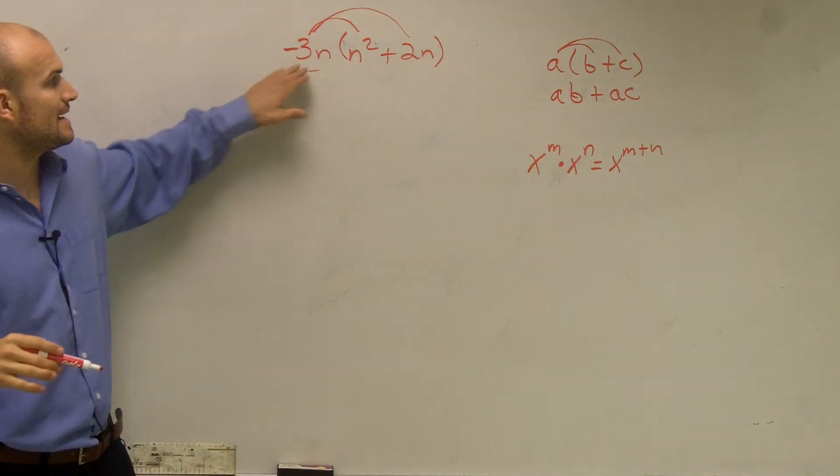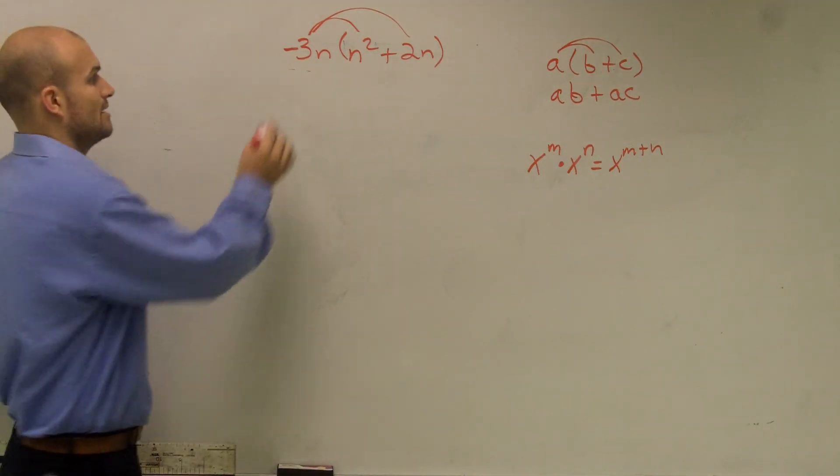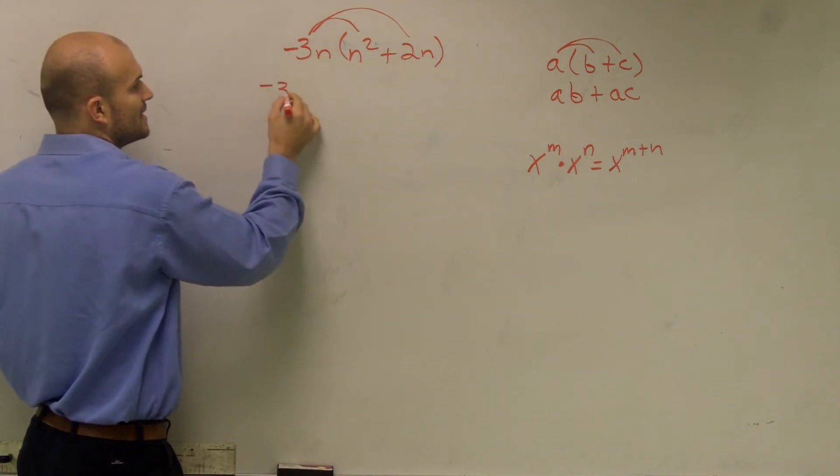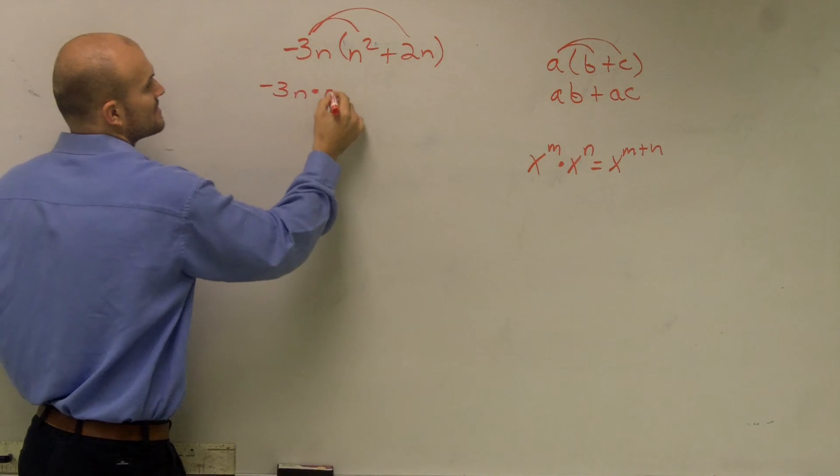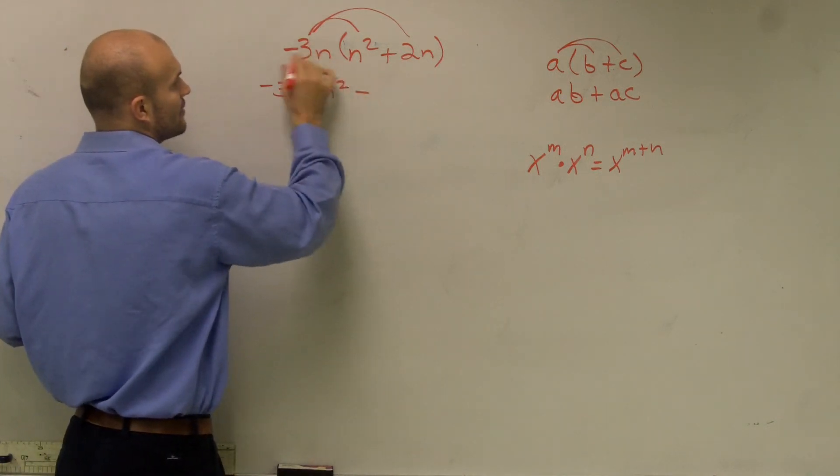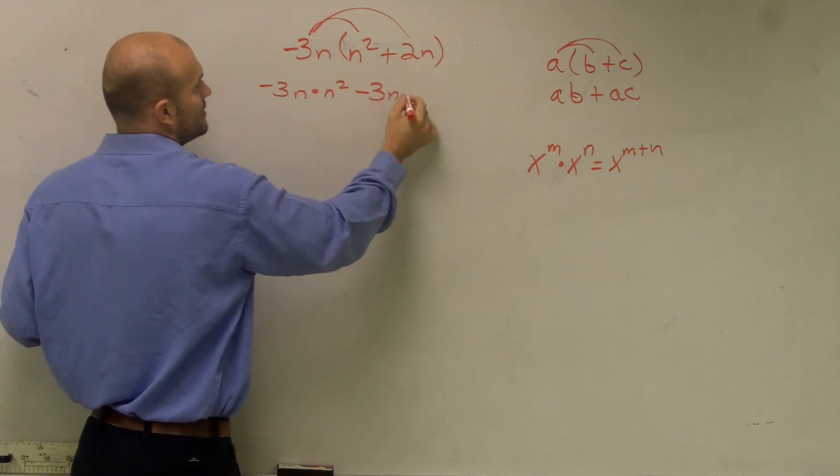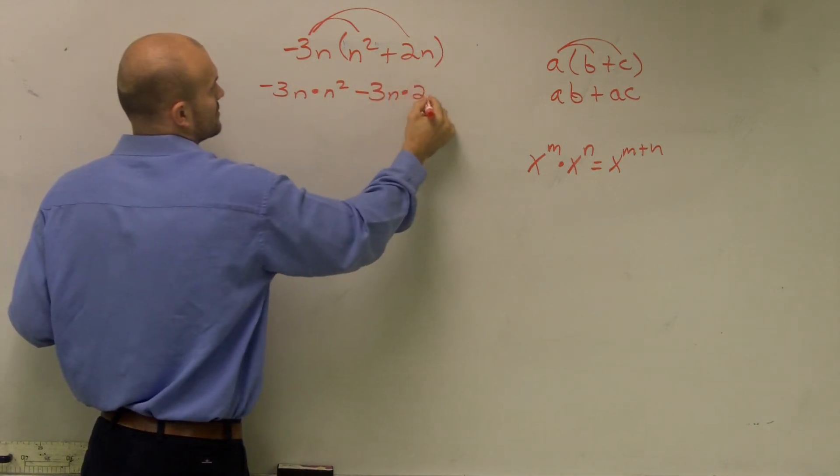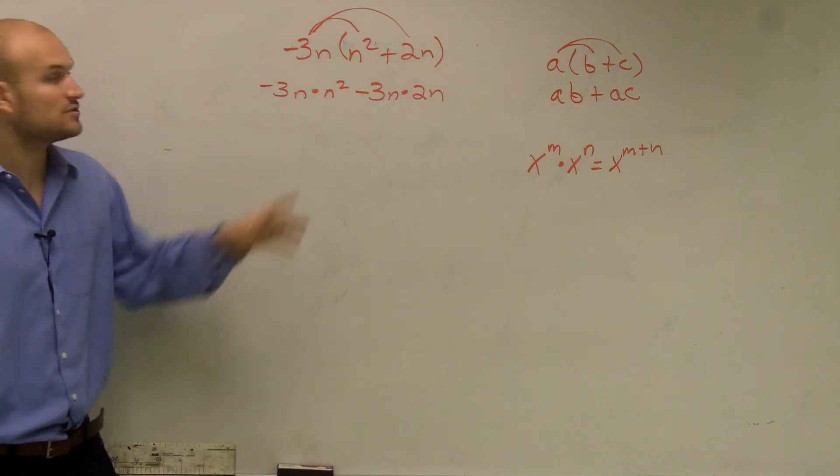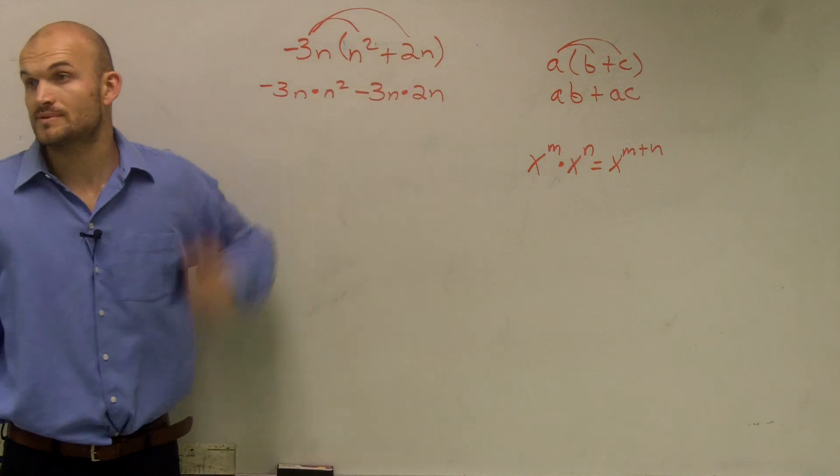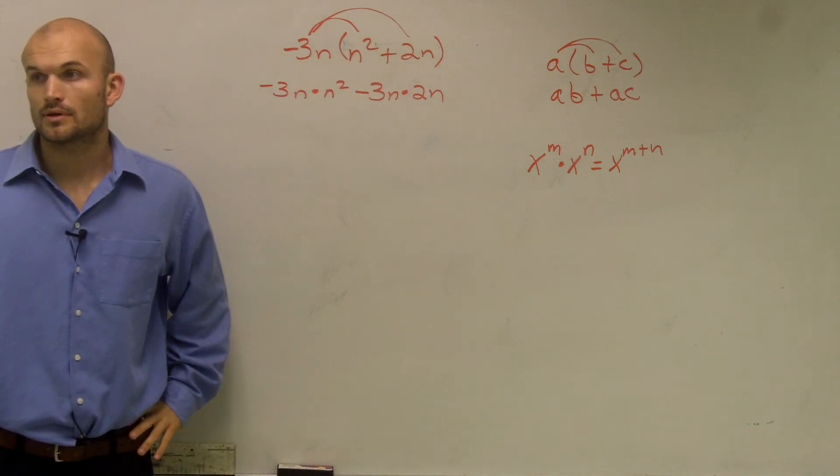It is different because, remember, now we're multiplying. So what I'm doing is I'm not adding these up yet. All I'm doing is I'm saying negative 3n times n squared and then minus, and then another negative 3n times 2n. So what's the difference? What I'm doing is I'm multiplying this negative 3n times both of those terms.